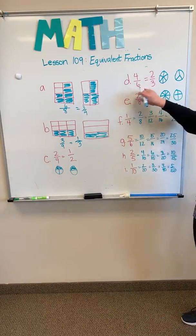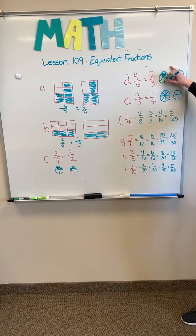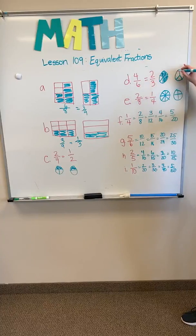Our next one is 4 sixths. I'm going to shade in 4 of these: 1, 2, 3, 4, and 2 thirds.